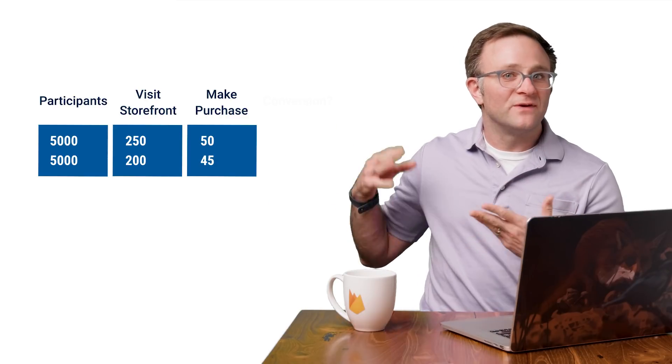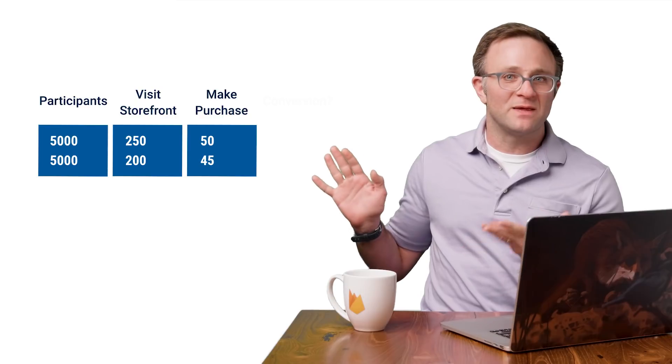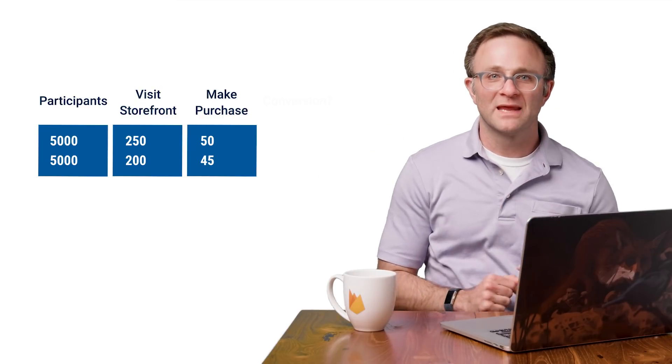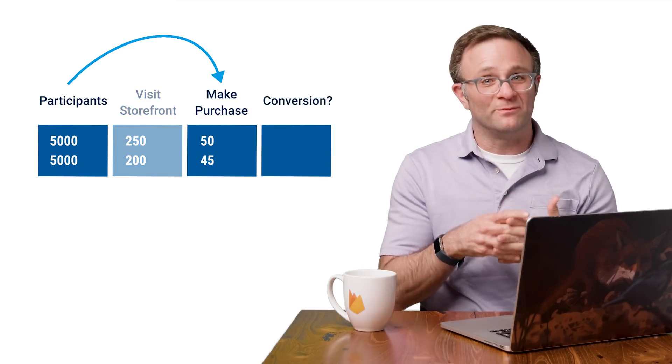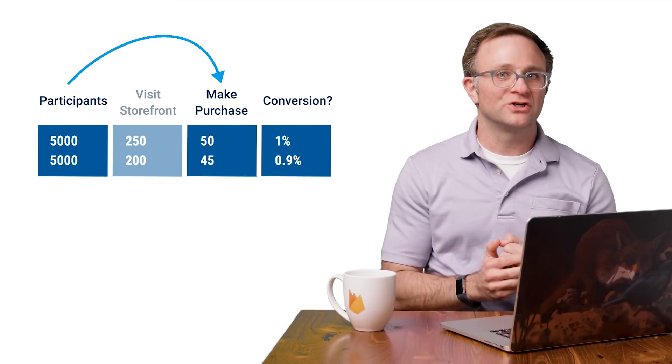Why does this matter? Well, suppose that due to some random chance, more people in experiment variant A decide to visit our storefront. Then out of these two groups, like 50 people make a purchase in variant A and 45 people make a purchase in variant B. Now, if we were to just look at the conversion rate from being in the general variant population to making a purchase, you might conclude that variant A did better by a little bit. It's got a slightly better conversion rate.